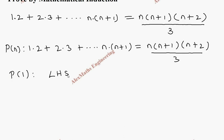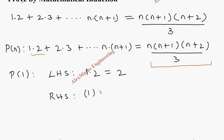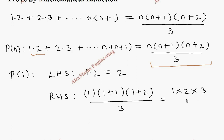For P(1), we take the left hand side. When n = 1, the left hand side is just the first term, which is 1·2 = 2. On the right hand side, substituting n = 1, we get 1·(1+1)·(1+2) / 3 = 1·2·3 / 3. After cancelling, we get 2. So LHS equals RHS.